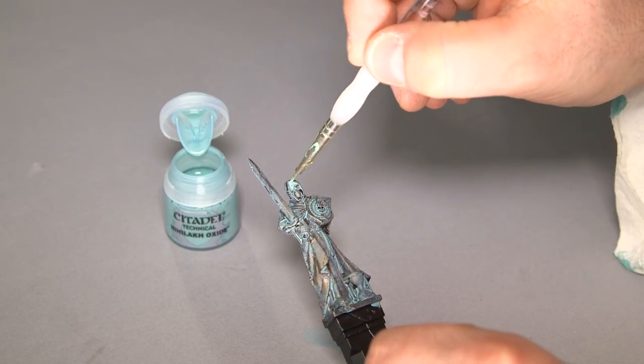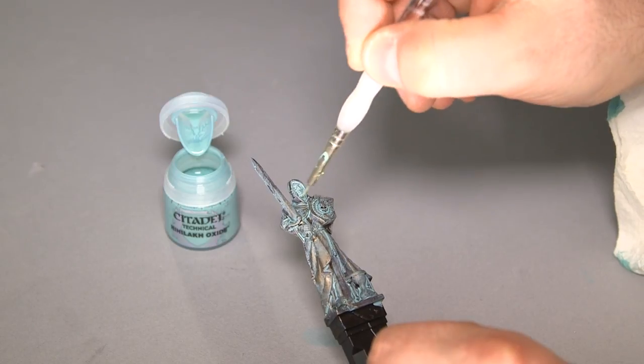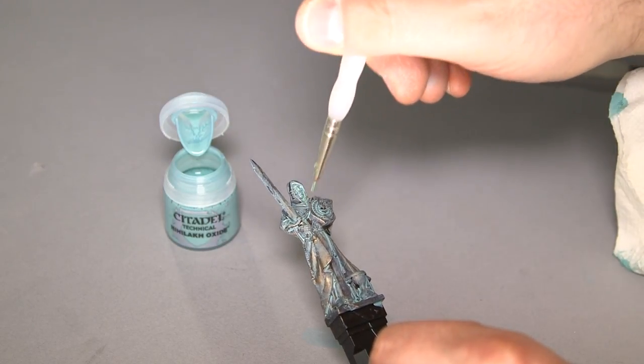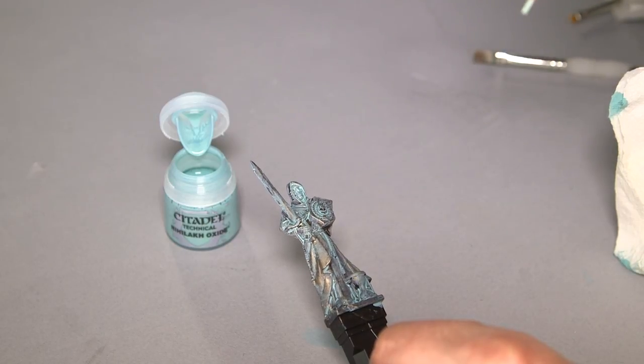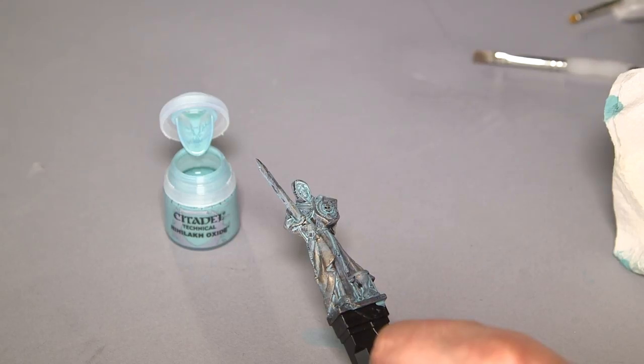Now we want to get into some of the details, and with a smaller brush, just fill that right in where the elements have really, really attacked the metal. And then wipe it off.